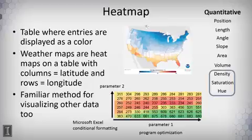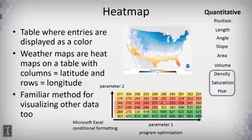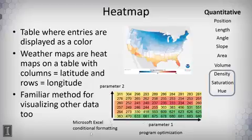You can do this with continuous variables, but also discretely — we do this in computer science all the time. If I have a program I'm trying to optimize, I might change one parameter some discrete number of times and another parameter some discrete number of times, trying to find the sweet spot in performance. The lowest performance is displayed in red; 230 or 233 is the optimal value here, and I can see which parameter values give worse results. This was created using Microsoft Excel's conditional formatting option, which allows you to represent values with color.